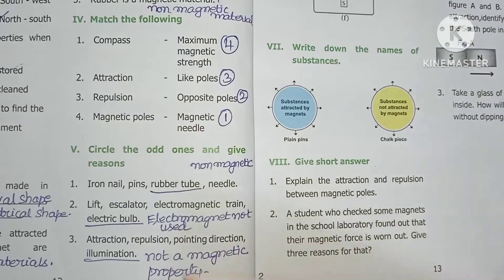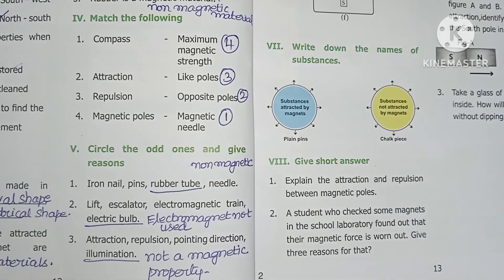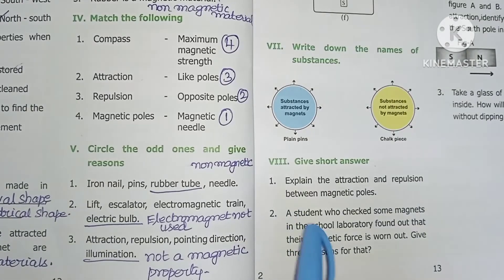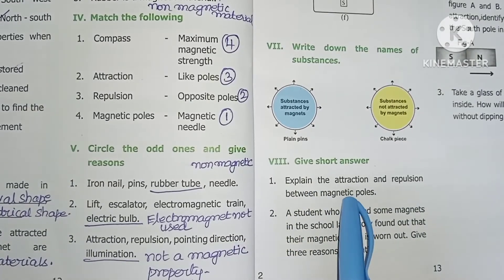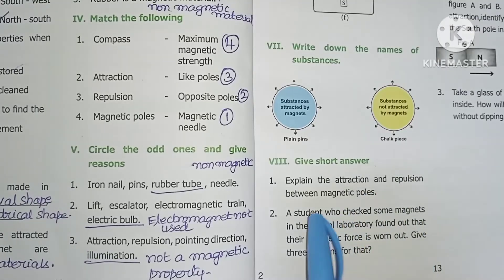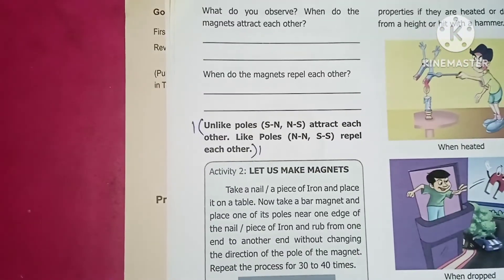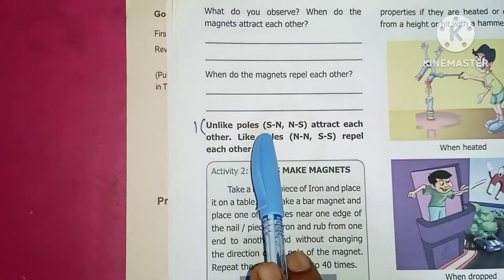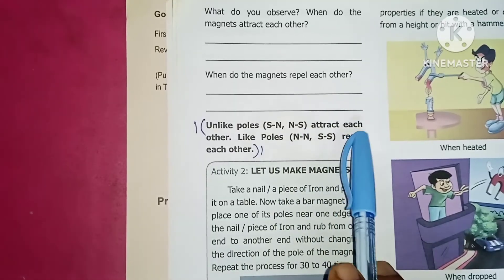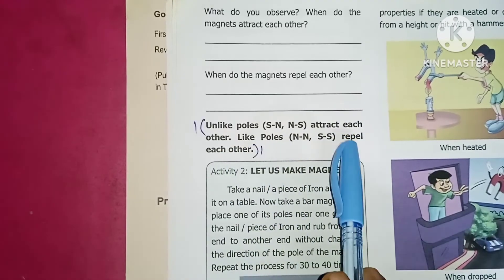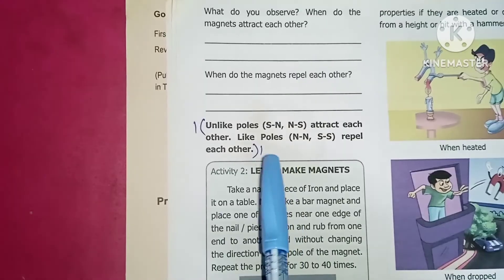Next, give short answer. Explain the attraction and repulsion between magnetic poles. The answer is on page number 6. Unlike poles S-N and N-S attract each other. Like poles repel each other. This is the first answer.